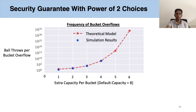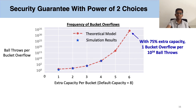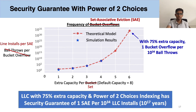Using theoretical models and Monte Carlo simulations, we calculate the frequency of bucket overflows shown on the y-axis in log scale as the extra capacity per bucket increases shown on the x-axis. We notice a super-exponential curve: with each unit increase in bucket capacity, the number of ball throws per bucket overflow gets squared. So in five to six successive squarings, we reach a situation where one bucket overflow is seen every 10^34 ball throws. In LLC terms, a cache with 75% extra capacity and power-of-two-choices indexing has a security guarantee of one set-associative eviction every 10^34 LLC installs — or one SAE per 10^17 years, which is higher than the lifetime of the universe.